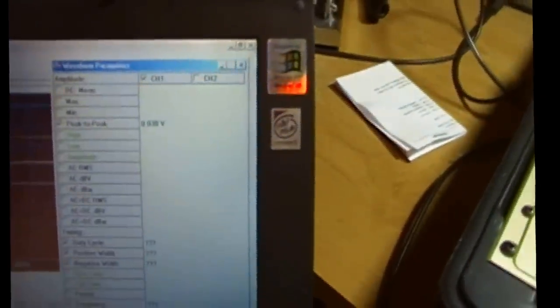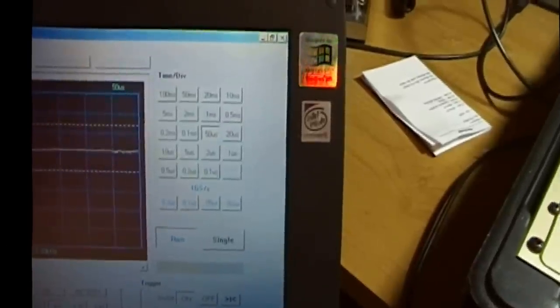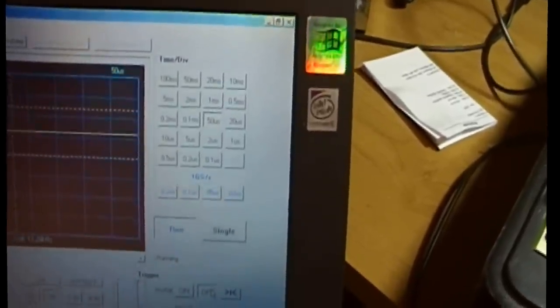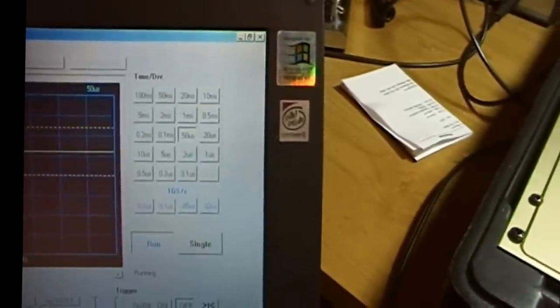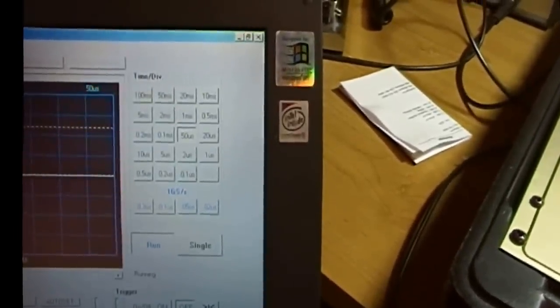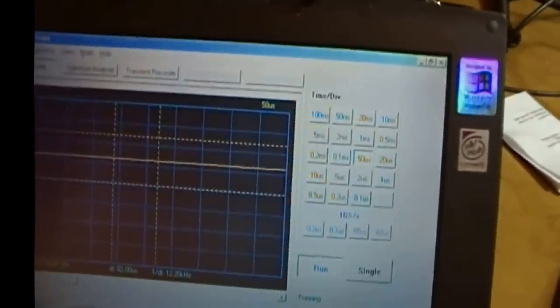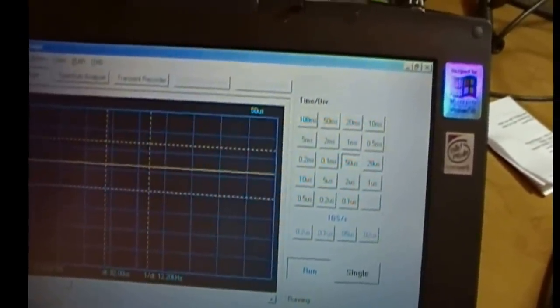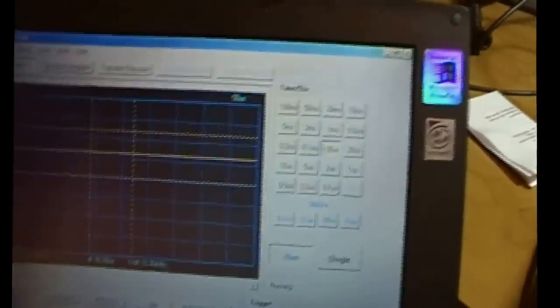And if we come over here on the scope. This is a times ten probe, by the way. That's ground. And so it's just a little over one division above. And we're on 1.5 volts per division, which actually says 0.15, but we're times ten probe.